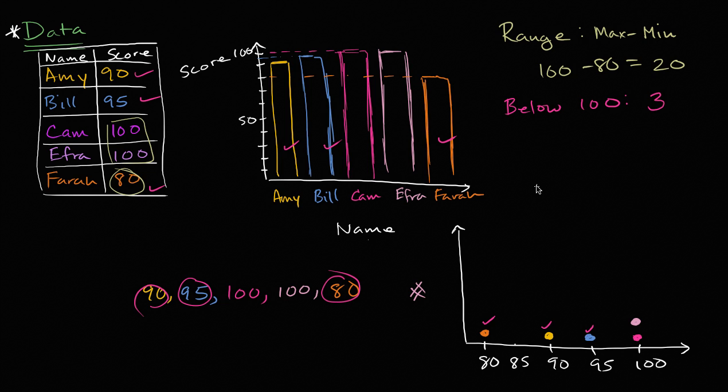And you could also ask yourself, what is the most frequent score? You could answer that question with any of these ways of representing this data. Looking at the original table, there's only one 90, one 95, one 80, but there's two 100s. So the most frequent score is 100. You'd see that in the bar graph too, where you have two 100s. And here in the frequency plot is probably the clearest, where you see the most frequent one is the one that has the most dots on it, which is 100.